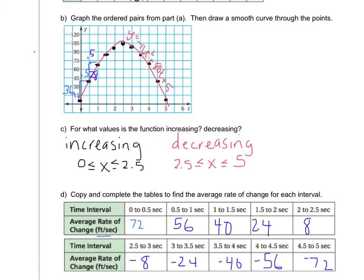What I want to make sure that you understand is that this is representing the speed of the water balloon. So it starts off really super fast, going 72 feet per second. And then as it goes up in the air, it's getting slower and slower. Its speed is going down. Then it hits its maximum point at 2.5 seconds. And then on its way down, it's going 8 feet per second. Then it goes 24 feet per second. So it's gaining speed as it goes down.